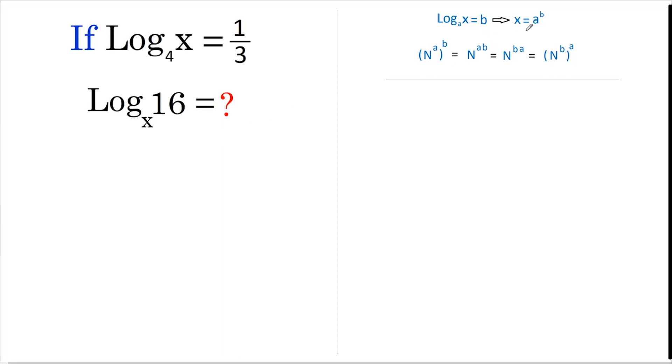First, we're going to use this rule here to rewrite the first equation. So this becomes 4 to the power of 1 third equals x.